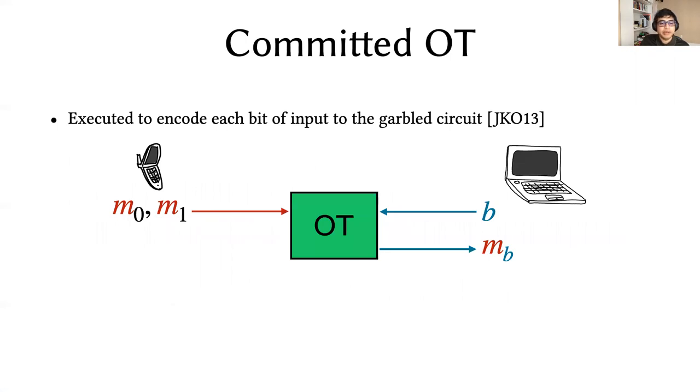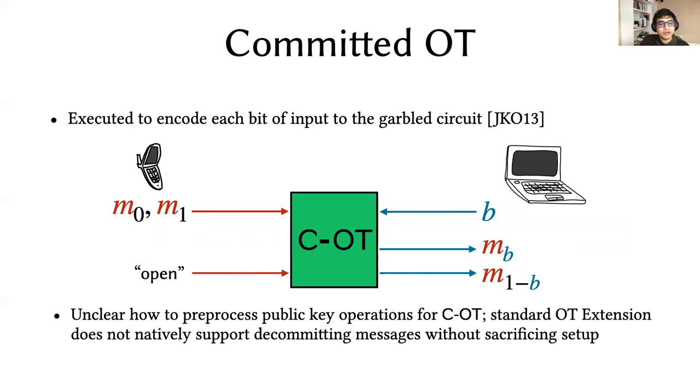Now we turn to the other dominant logistical cost, that is committed OT, of which one instance is needed for each bit of the witness. The additional instruction that committed OT offers on top of regular OT is the ability to open both messages that the sender had sent earlier. Unfortunately, it's unclear how to pre-process public key operations to committed OT in such a way that the online phase is efficient, which in our setting is going to be essentially non-interactive, and the correlations are still usable after executing the open phase. We relax the problem a bit by tailoring it to our setting. We want the receiver to input its choice bit once, and then we want an unbounded number of instances with this fixed choice bit thereafter. This is fine in our setting because the witness is the PRF seed, and it's going to be the same for all proofs.